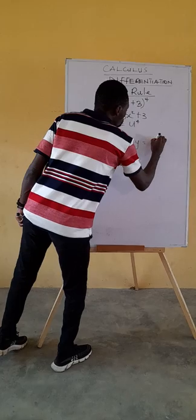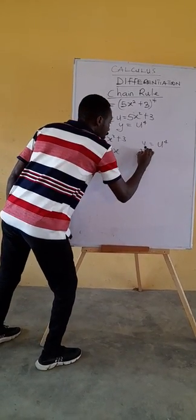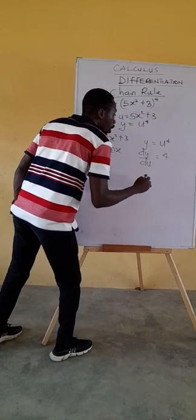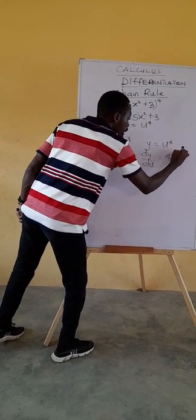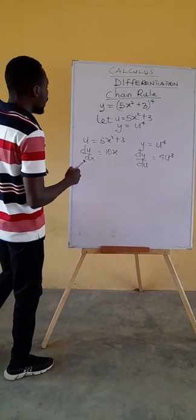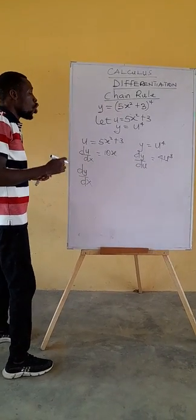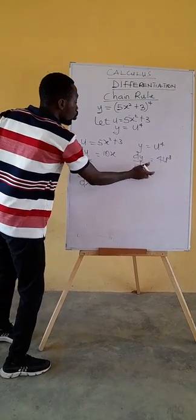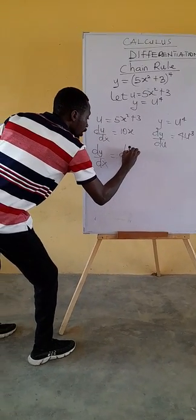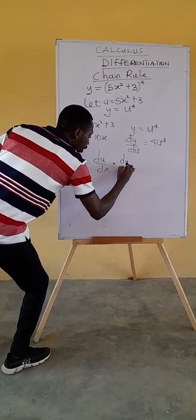Then y equals u^4. To find the derivative, that's dy/du, we'll drop the power 4, subtract 1 from the exponent that becomes 3. The chain rule is saying that dy/dx is the product of these two derivatives.